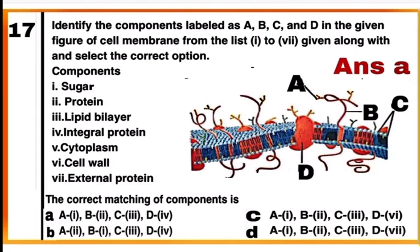Question 17: Identify the components labeled A, B, C, and D in the given figure of the cell membrane. Option A is correct: A is sugar (number 1), B is protein (number 2), C is the lipid bilayer (number 3), and D is the integral protein (number 4).